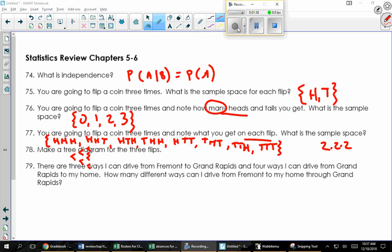The next one says there are three ways to get from Fremont to Grand Rapids and four ways from Grand Rapids to the house. How many different ways can I drive from Fremont to my home through Grand Rapids? With a tree diagram, it would look like three ways on the first part and four for each of those ways, giving me a total of 1, 2, 3, 4, 5, 6, 7, 8, 9, 10, 11, 12. 12 different ways, which of course is the three ways for the first leg of the trip and four ways for the second leg of the trip.